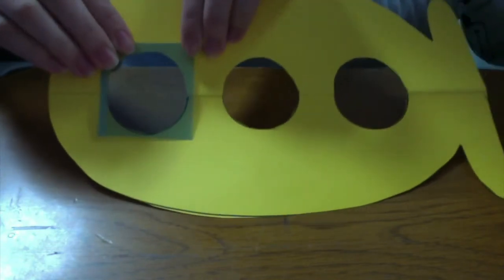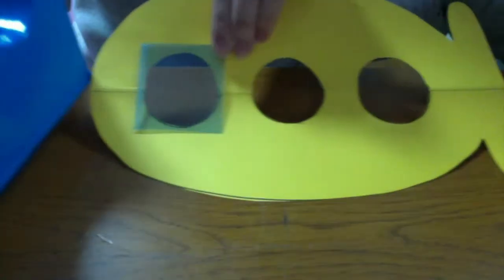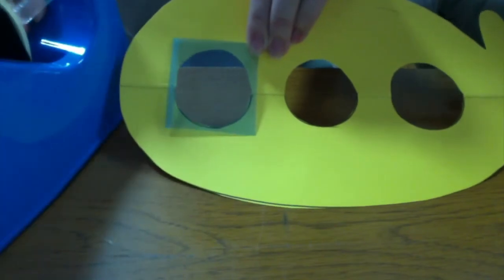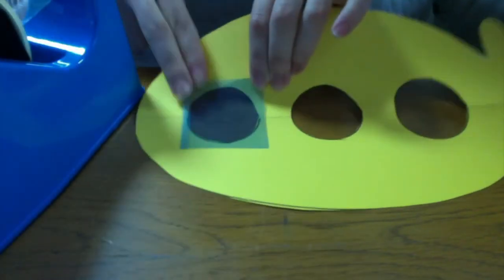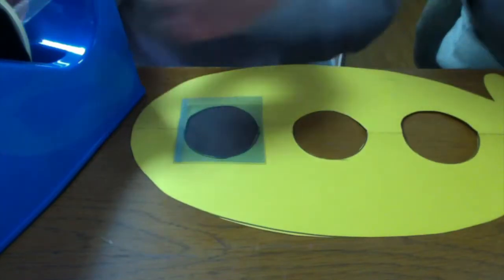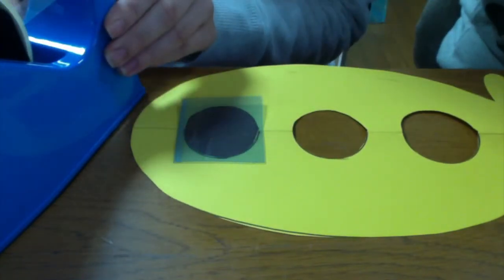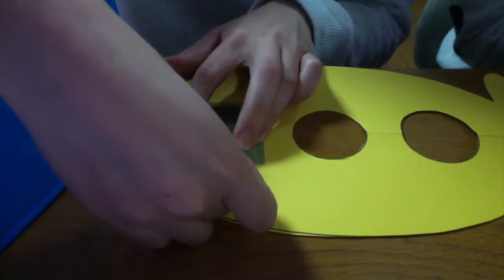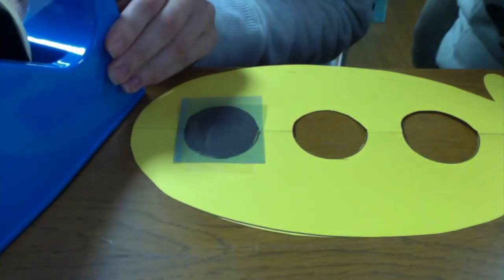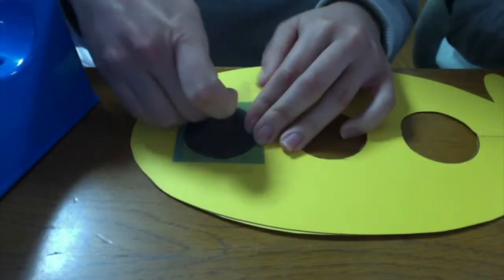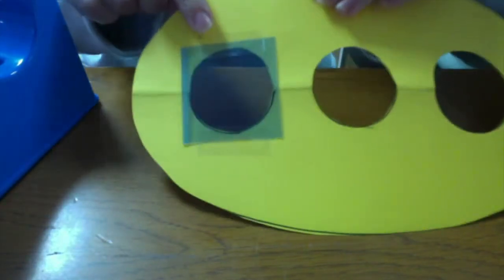Take your plastic film and put it on the back side of the submarine. Take some tape and tape the top and bottom of the plastic. Well done!